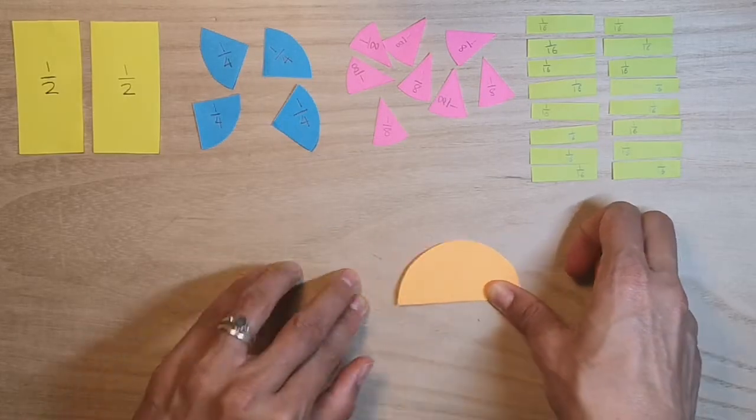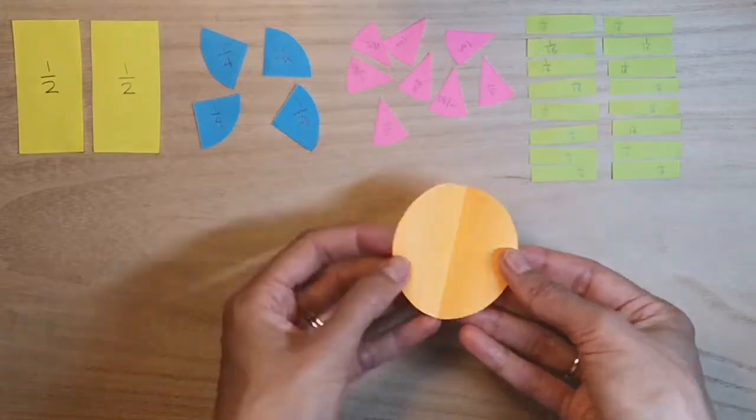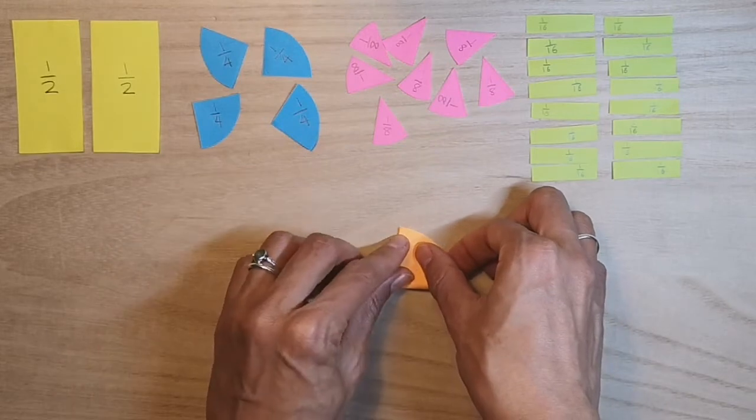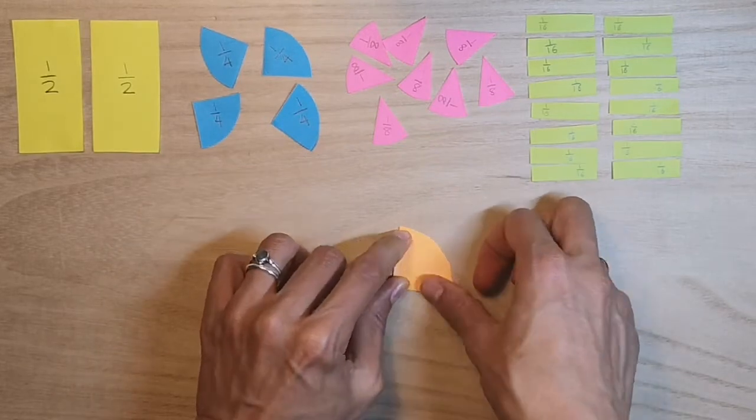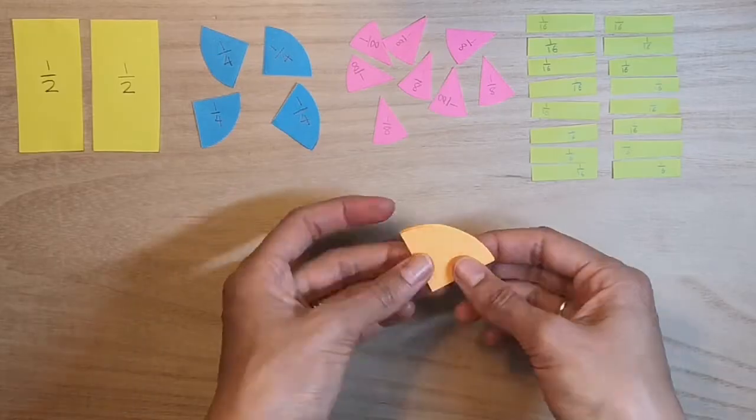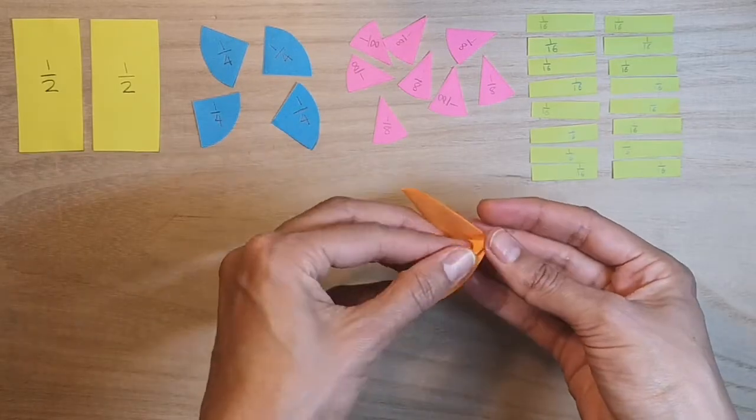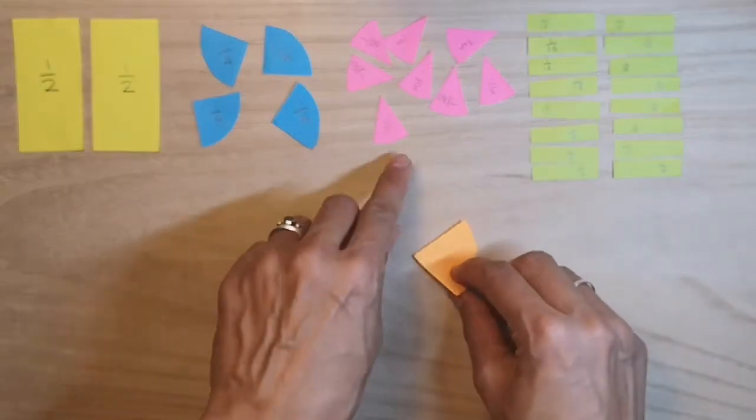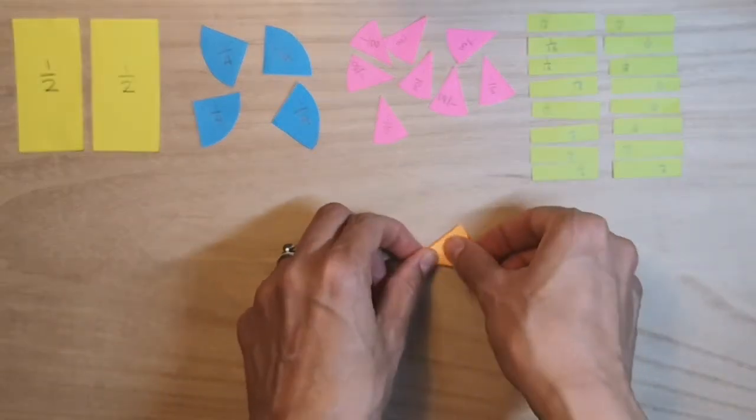So folding it in half. Now folding it into quarters. Yep. One, two, three, four quarters. I'm going to fold it again into eighths.